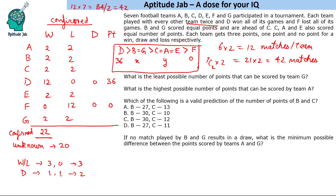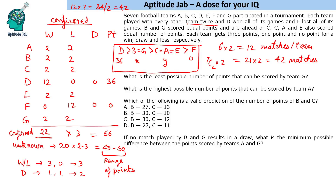If all remaining 20 matches are drawn, that gives 40 points from unknown matches. If all result in win-loss, that gives 60 points. So the range of points from unknown matches is 40 to 60. Combined with 66 from confirmed matches, total points range from 106 to 126.